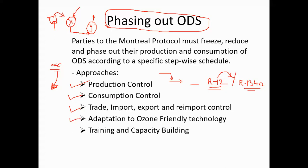Another measure is the adoption of ozone-friendly technology — using substances that do not contain chlorine or bromine atoms. For example, we have shifted from R22 to R134a refrigerant in refrigerators. R134a does not contain chlorine or bromine, so it is not harmful to the ozone layer — it is an eco-friendly refrigerant.